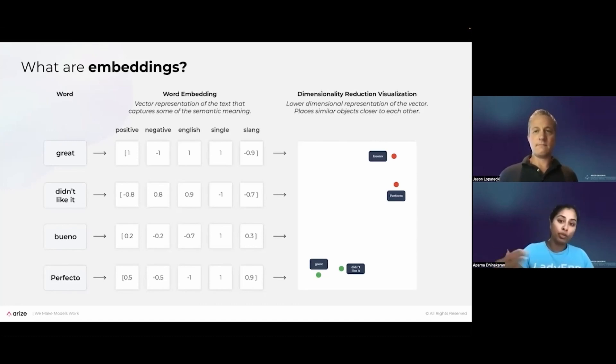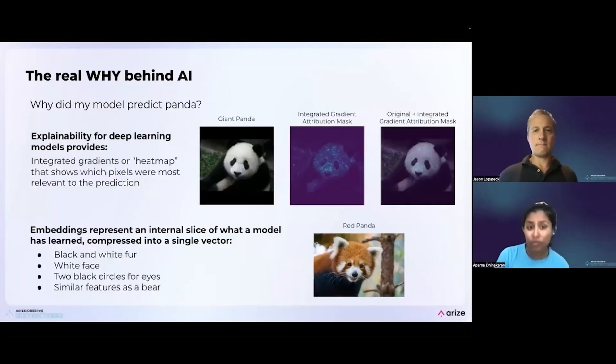So words that are similar to each other will show up, will have a vector that's closer together in distance. Words that are further apart from each other will be further apart. And so you can think about it as really output of these deep learning layers that contain the structure of what the models learn and can be used to troubleshoot unstructured models. And it's really the best way to get at the why behind AI.